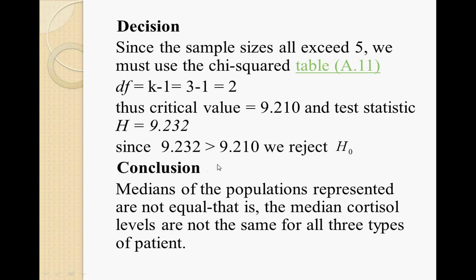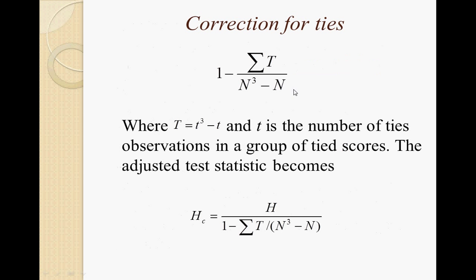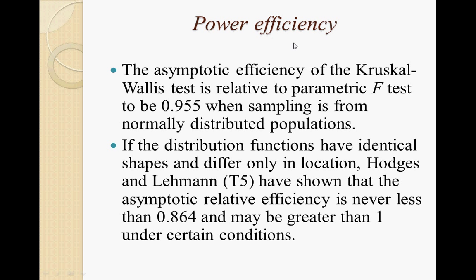The conclusion for this example is that the medians of the populations represented are not equal — that is, the median cortisol levels are not the same for all three types of patients. This topic also covers correction for ties and power efficiency. That's all for this topic. Thank you.